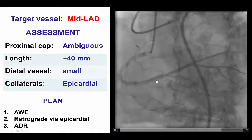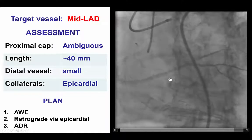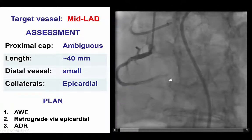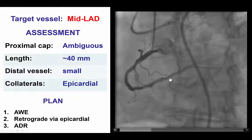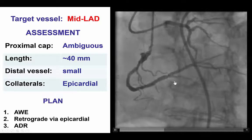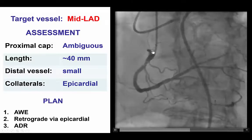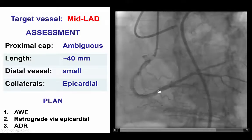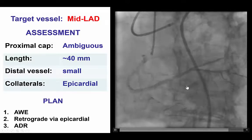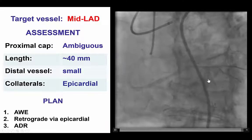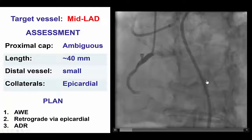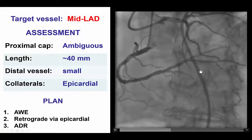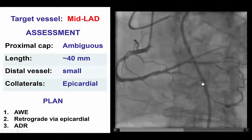We did inject the right coronary artery because we were not sure if there are any collaterals given from the right, which there did not appear to be. However, having a guide into the right coronary can be very useful because the ipsilateral collaterals may get compromised during CTO crossing attempts.